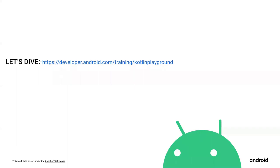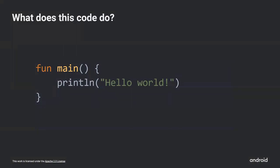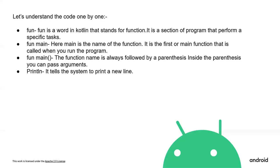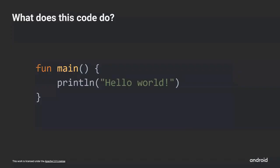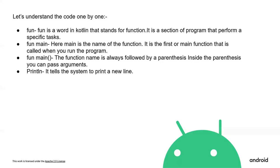Let us dive into the Kotlin Playground where we will start practicing Kotlin codes. The link to the Kotlin Playground is displayed on the screen. Can you guess what does this code do? It will print Hello World. Now let us understand the code one by one. 'fun' is the keyword in Kotlin that stands for function — it is a section of a program that performs specific tasks. The main function defines the name of the function; it is the first function called when you run the program. The main function is always followed by parentheses, inside which you can pass arguments. println tells the system to print a new line.